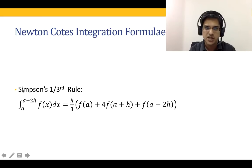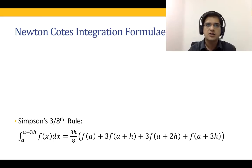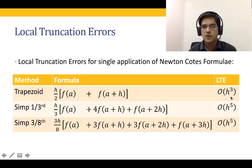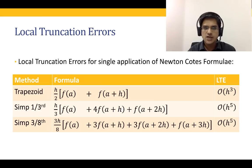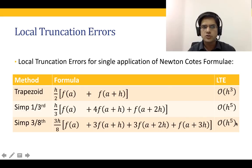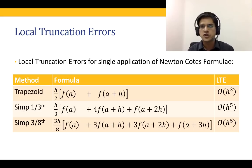Simpson's three-eighths rule is shown for completeness but won't be covered in this lecture. To summarize the formulae and local truncation errors: the trapezoidal rule has a local truncation error of order h³, while a single application of Simpson's one-third rule is h⁵ accurate — significantly more accurate. Simpson's three-eighths rule is also h⁵ accurate. As a result, Simpson's one-third rule is more popular, while the trapezoidal rule is popular for its simplicity.